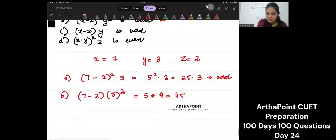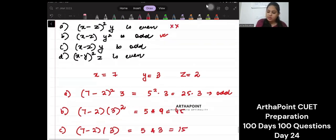(x-z) times y is 5 into 3, which is 15. 15 is odd. This is correct.